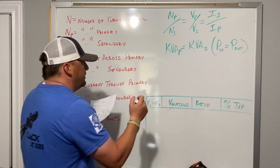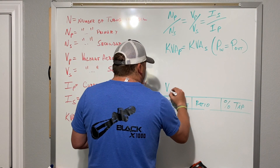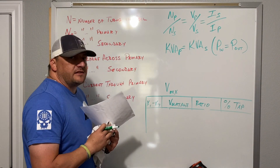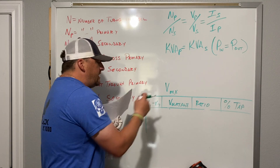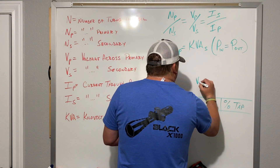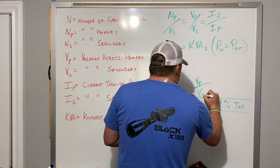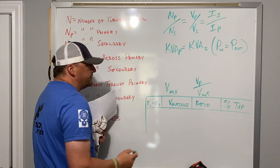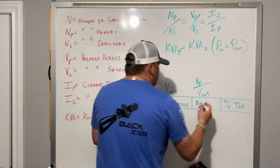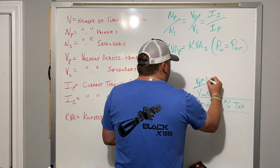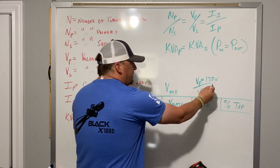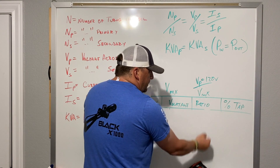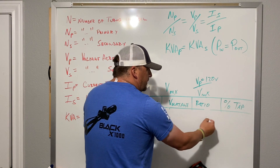For the lab calculations, the measured output voltage is going to be called Vmx. The ratio is going to be VP over Vmx — voltage primary over voltage Vmx. We're going to set the primary voltage to 120 volts, so we get the ratio by dividing 120 volts by Vmx.